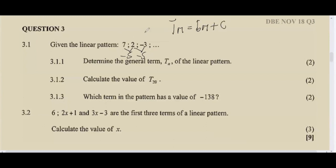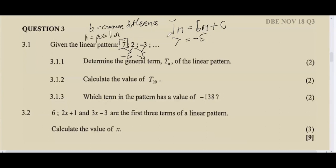To calculate tn we write the formula: tn = bn + c, where b stands for the common difference, so b is negative 5. We find the constant c by taking a known term value. Since 7 is in position one, n equals 1. Had we used 2, we'd substitute n equals 2; had we used negative 3, we'd substitute n equals 3.